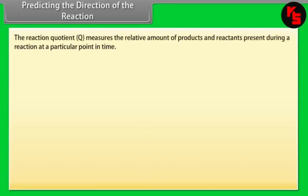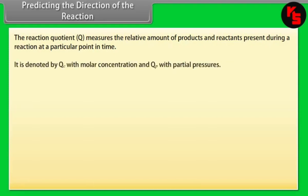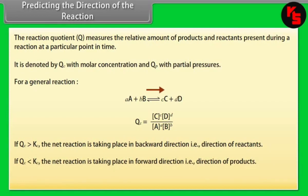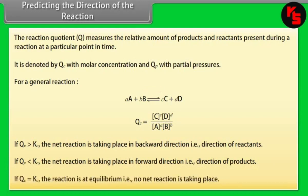Predicting the Direction of a Reaction. The reaction quotient Q measures the relative amounts of products and reactants at a particular point in time, denoted by Qc with molar concentrations and Qp with partial pressures. If Qc > Kc, the net reaction proceeds in the backward direction. If Qc < Kc, the net reaction proceeds in the forward direction. If Qc = Kc, the reaction is at equilibrium and no net reaction is taking place.